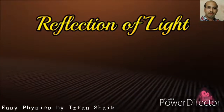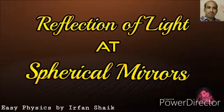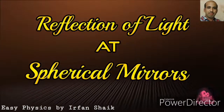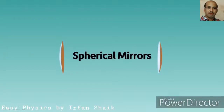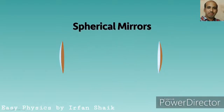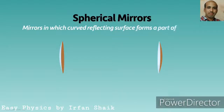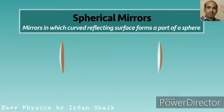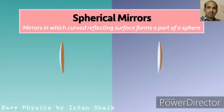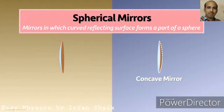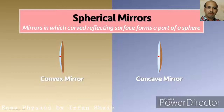In this video, let us learn about spherical mirrors. Spherical mirrors are mirrors in which the curved reflecting surface forms a part of a sphere. There are two types: if the reflecting surface is inwards, it is called a concave mirror; if the reflecting surface is outwards, it is called a convex mirror.